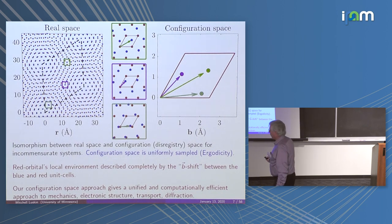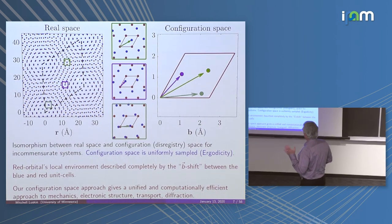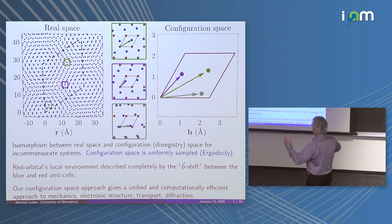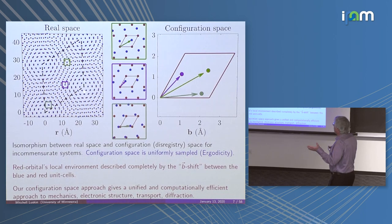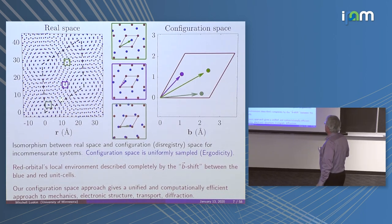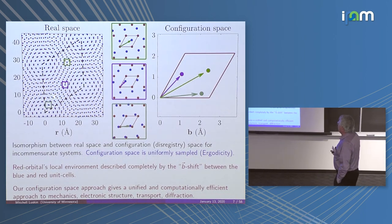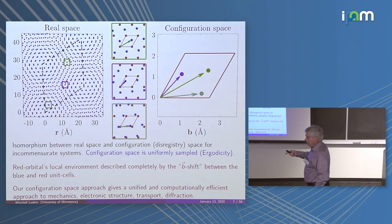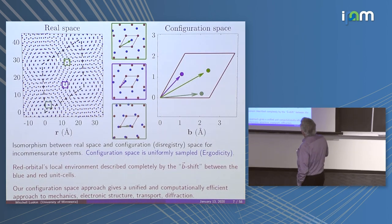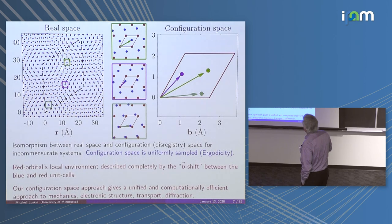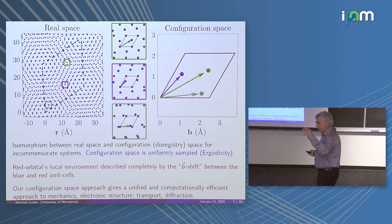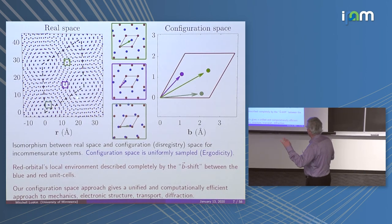Let's look at a simple example: a twisted bilayer of two hexagonal structures, one twisted on another at a relatively small angle. What we see here is the famous moiré pattern. A moiré pattern looks periodic, but it's not — there's still some modulation for an incommensurate system.